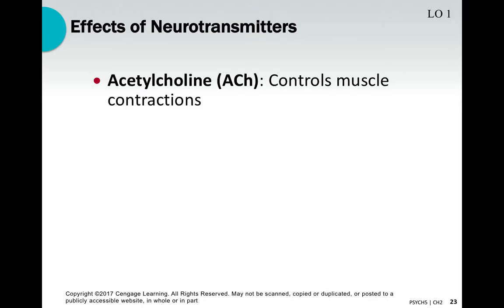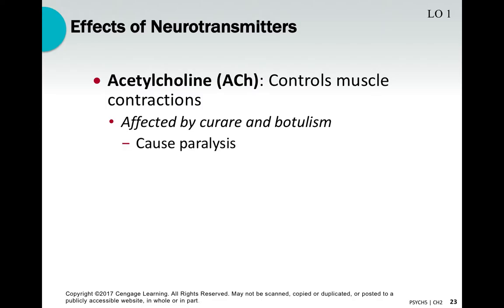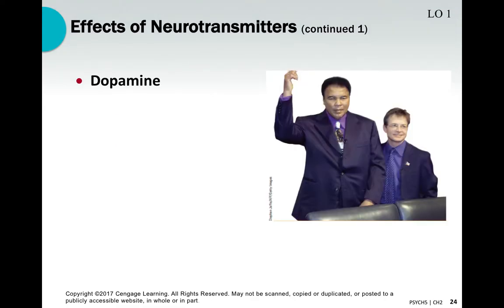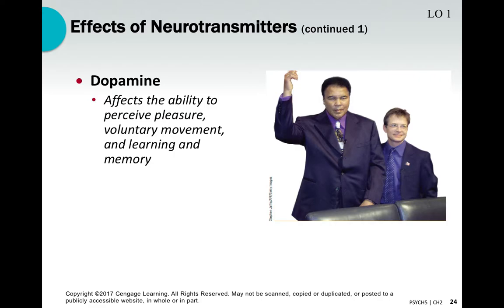Acetylcholine is linked to muscle contraction and physical movement. Botulism affects acetylcholine and causes paralysis; Botox also has acetylcholine as a component. It's found mostly in the hippocampus and is linked to memory — too little is associated with memory impairment, while too much is linked to paralysis. If you're bitten by a black widow spider, your brain is overwhelmed with acetylcholine, which leads to paralysis.